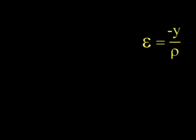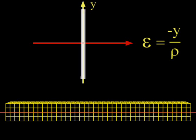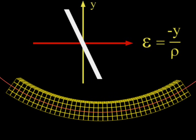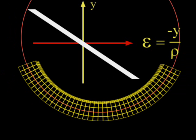This linear relationship between epsilon and y can be illustrated graphically. Before the beam is bent, rho is infinite, and the strain is zero everywhere across the depth of the beam. As the beam is bent, rho decreases, and the strain in each fiber increases. In all cases, the strain varies linearly with y.